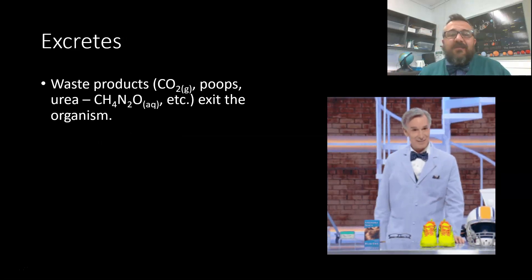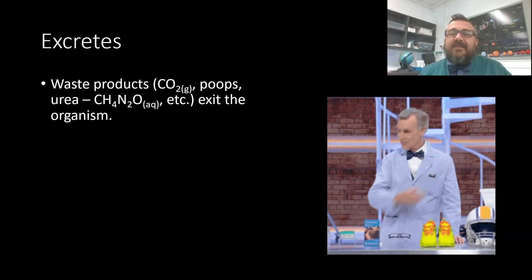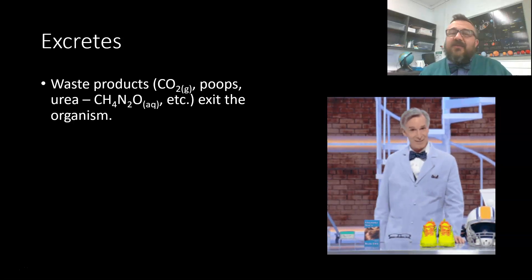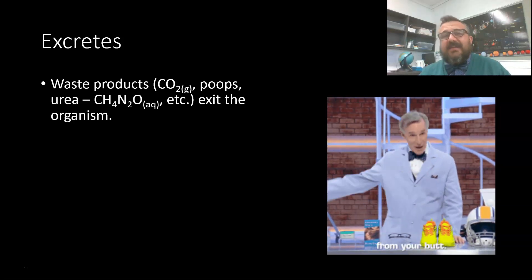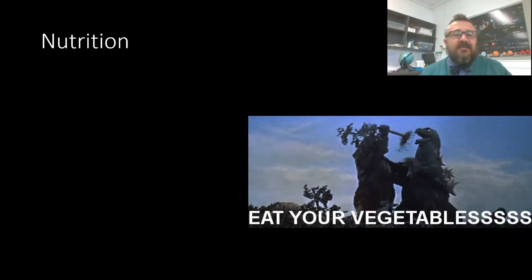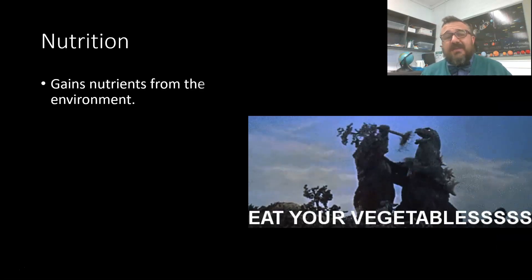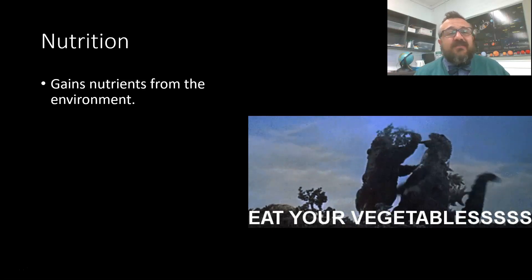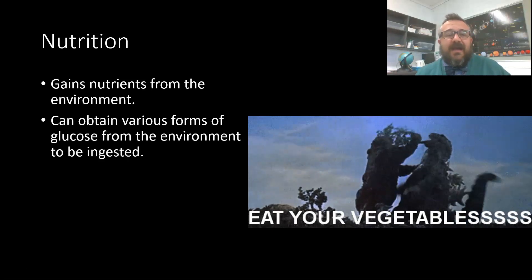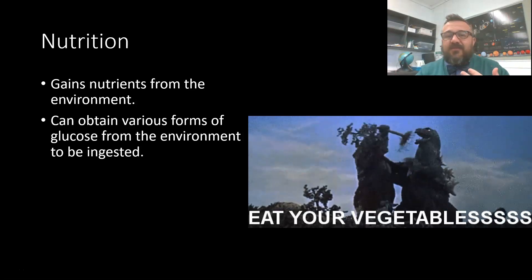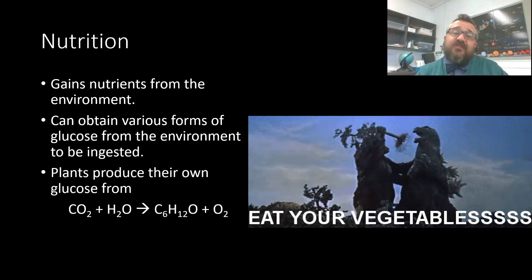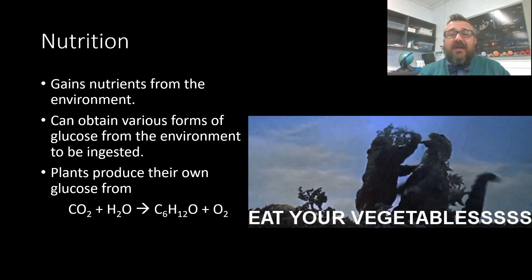Organisms excrete waste — carbon dioxide, poop, urea — and these exit the organism, so it makes waste and then excretes it out of the body or cells. Nutrition is really important: all organisms gain nutrients from the environment. As an animal, we obtain various forms of glucose from the environment to be ingested. Plants produce their own glucose using water and carbon dioxide from the environment, and then animals come along and eat that.